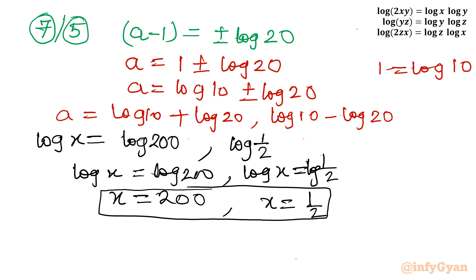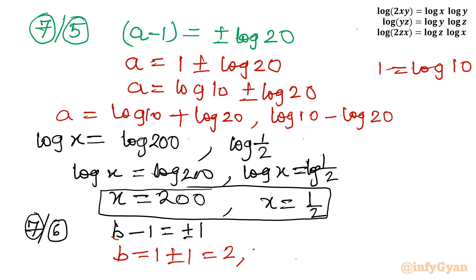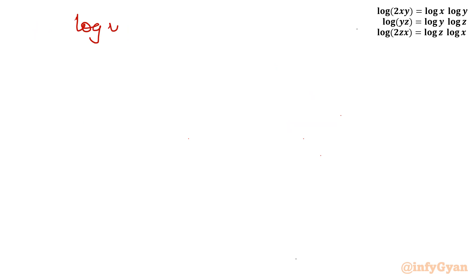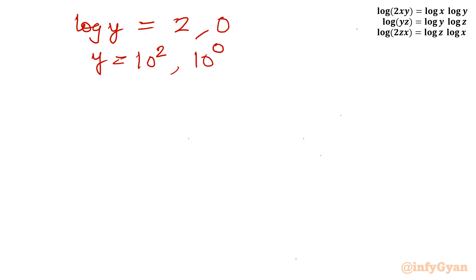Dividing equation 7 by equation 6 leaves b − 1 = ±1, so b = 1 ± 1, giving b = 2 or b = 0. Since b = log y: log y = 2 → y = 100, or log y = 0 → y = 10⁰ = 1.